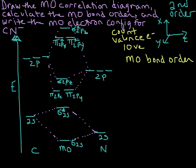Let's go ahead and fill these from lowest energy to highest energy using our orbital filling rules. We're going to put 2 here in the bonding — fill that up, opposite spin: 2, 4, 6, 8, 10. So we've filled in all of our valence electrons into our molecular orbitals.